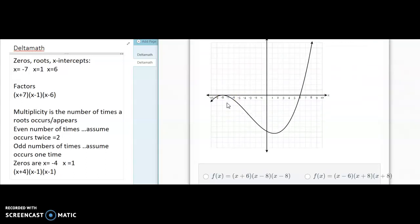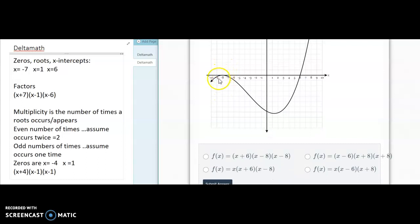So here at the negative 8, notice that it barely touches it. So we're going to assume that it has a double multiplicity because it's supposed to be even. And this one has a multiplicity of 1. So our answer would be c.